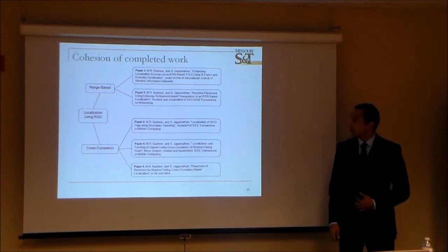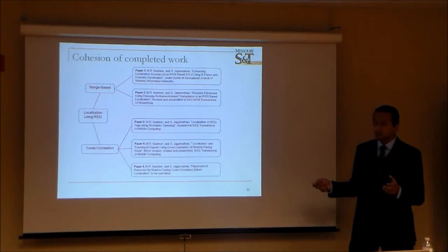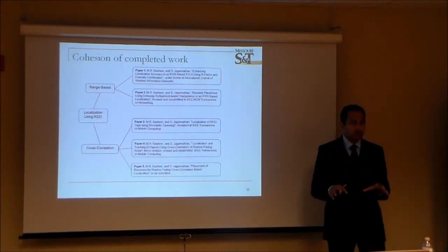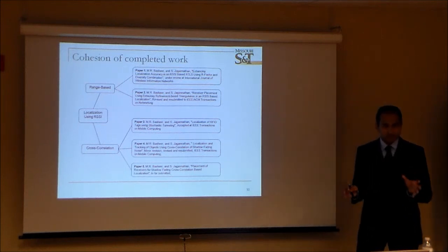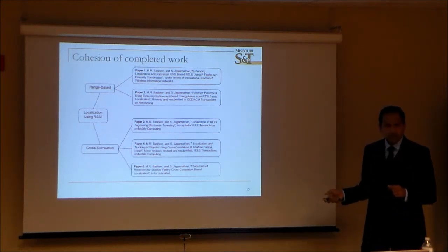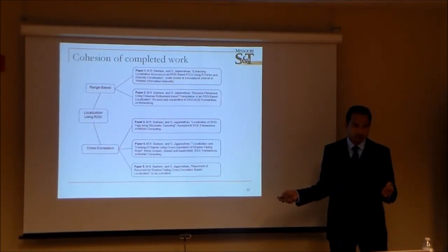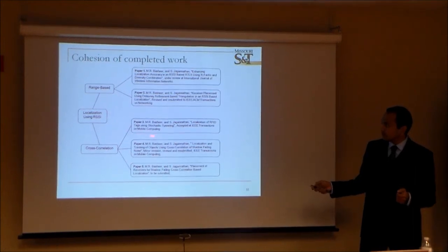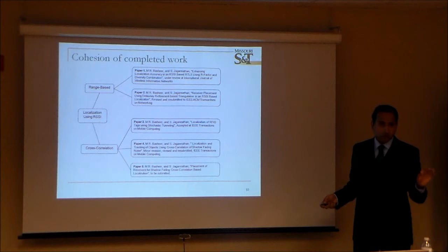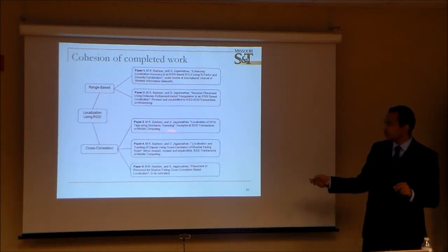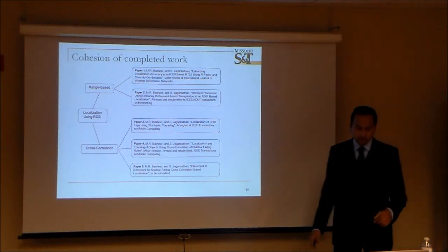My entire dissertation is organized into two sections. The first two chapters deal with a more conventional method for localization using range estimation from signal strength. The last three chapters cover cross-correlation based localization — my new contribution. The third chapter goes into RFID, the fourth returns to active transmitters and receivers, and the fifth chapter addresses receiver placement.